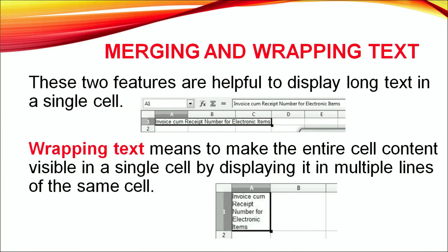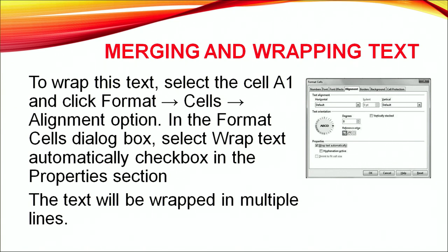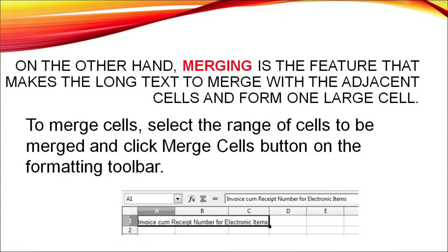Next is merging and wrapping text. These two features are helpful to display long text in a single cell. Wrapping makes the entire cell content visible in a single cell by displaying it in multiple lines. For wrapping, select the cell, click Format, then Cells, then Alignment, and select the 'Wrap text automatically' checkbox. Merging makes long text merge with adjacent cells to form one large cell. To merge cells, select the range and click the Merge Cells button on the formatting toolbar.